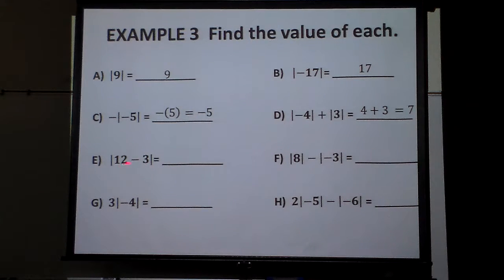Now, here, this is inside. So, I'm going to do 12 minus 3 first. 12 minus 3 is 9. And then the absolute value of 9, we already know, is what? 9.